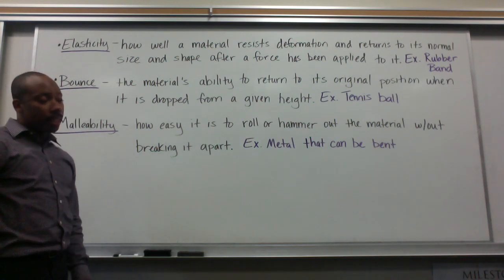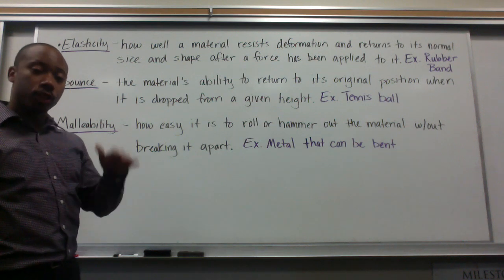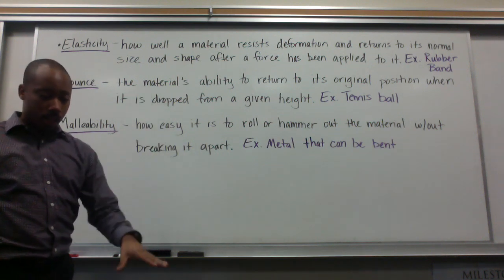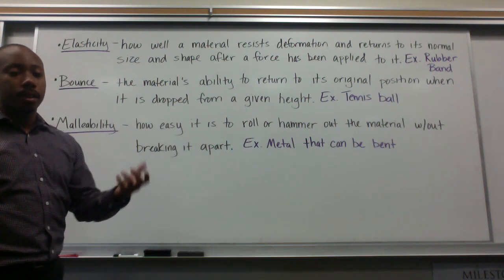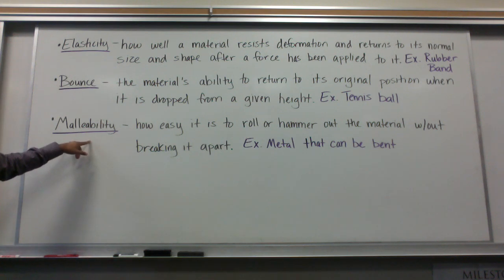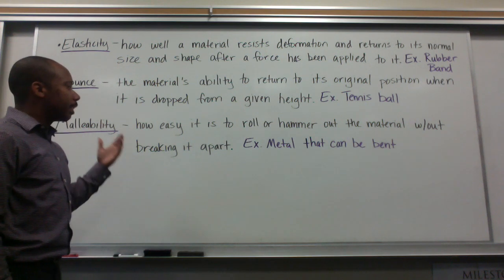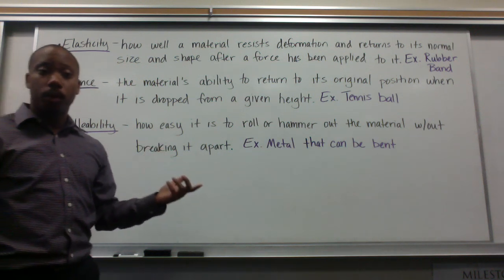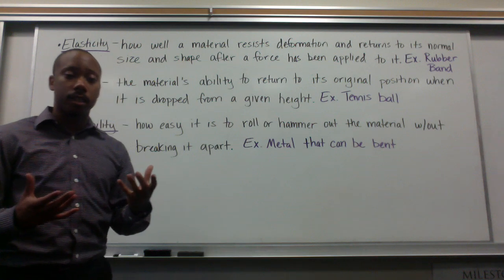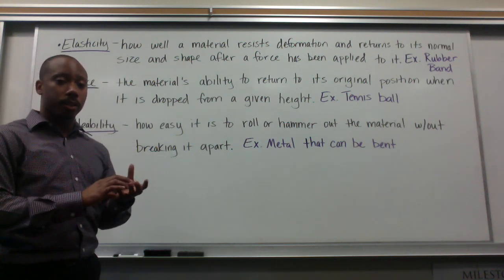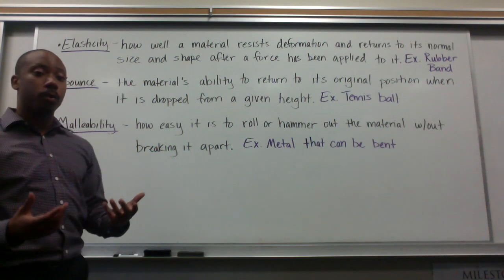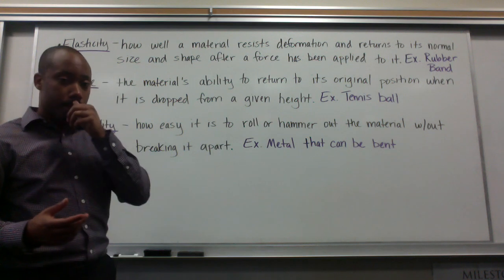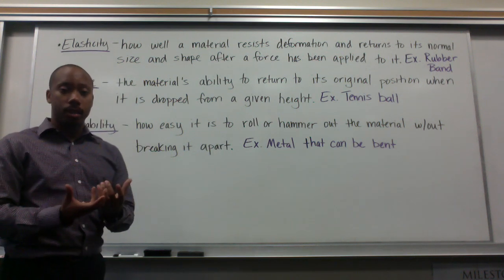Bounce is the material's ability to return to its original position when it is dropped from a given height. So if you have a tennis ball, for example, you bounce it and it comes back up — that property is known as bounce. And malleability is how easy it is to roll or hammer out the material without breaking it apart. How well or how easy is it to hammer or roll out that material? An example would be a metal that can be bent, like a metal sheet or a metal rod — they will be malleable if they can be bent.